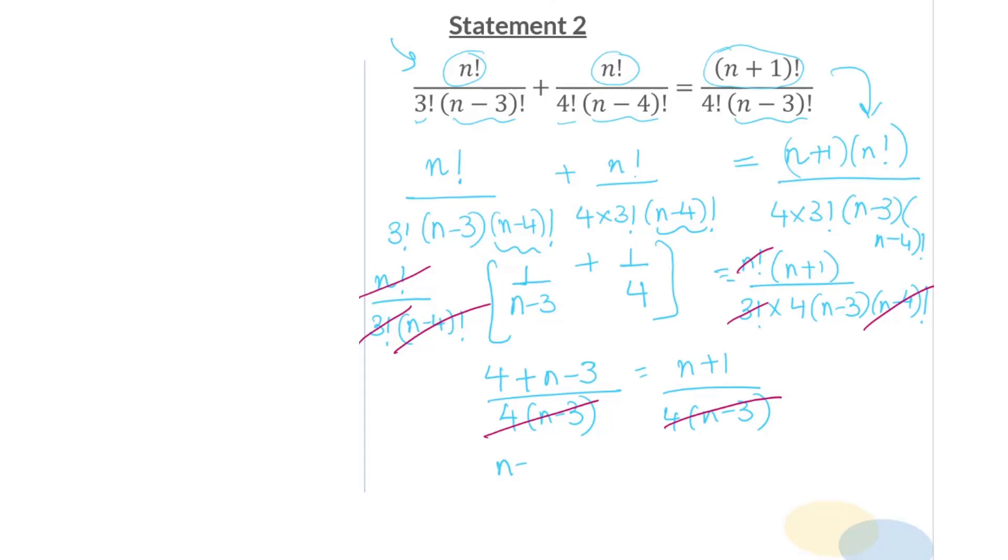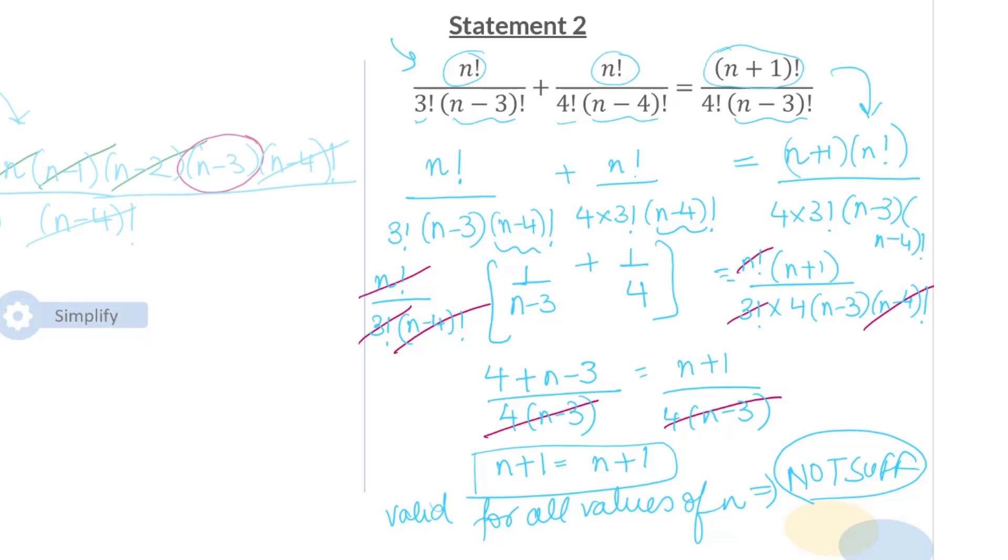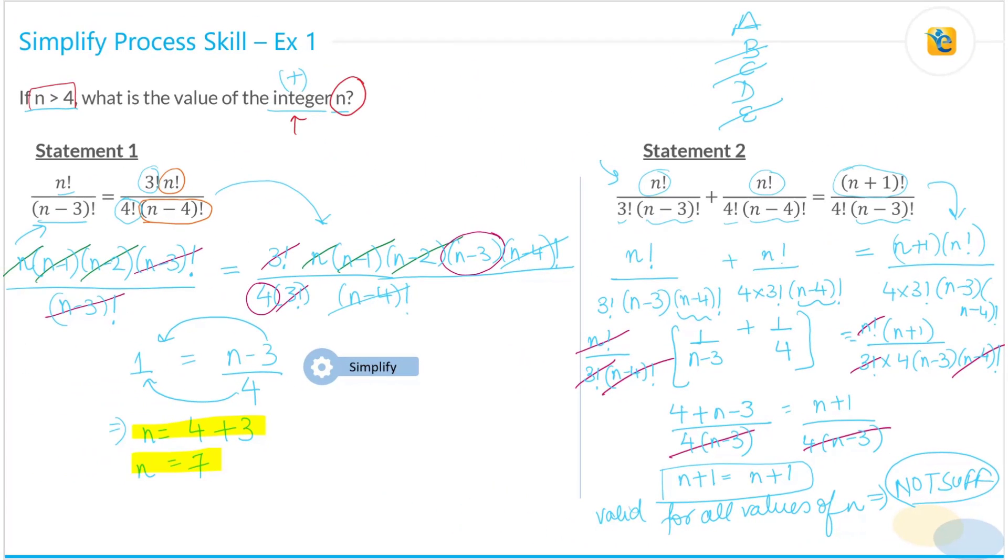And what I end up getting is N plus 1 is equal to N plus 1. Which means my right-hand side is equal to left-hand side. So frankly, this equation is valid for all values of N. Which means that this statement is not sufficient for me to figure out what is the value of N. This means that the correct answer choice is choice A and choice D is not correct.